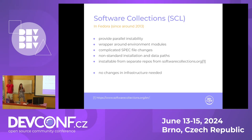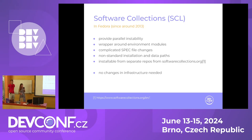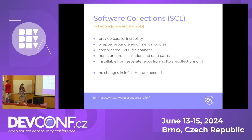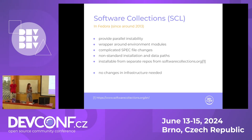Software collections provide parallel installability, so it is possible to install multiple packages of different versions at the same time. This brings some disadvantages, like complicated spec file changes - a lot of changes are needed in spec files to make them software collections compatible. Also, if you want to install the same program with the same name multiple times, the standard installation paths are no longer sufficient.